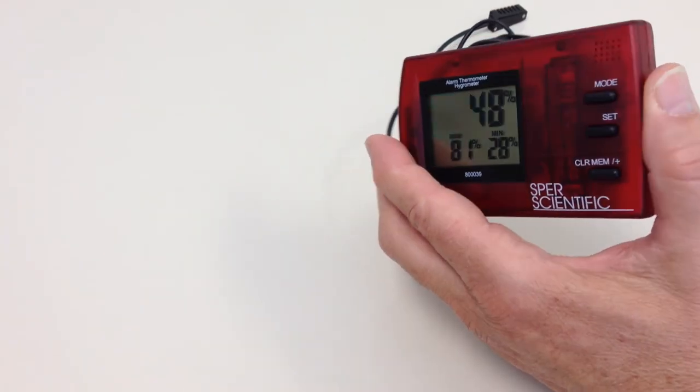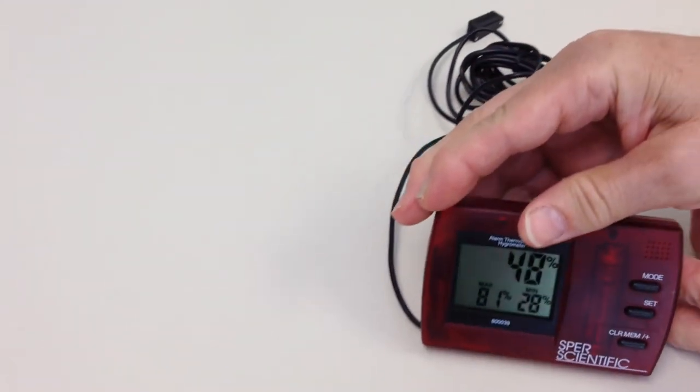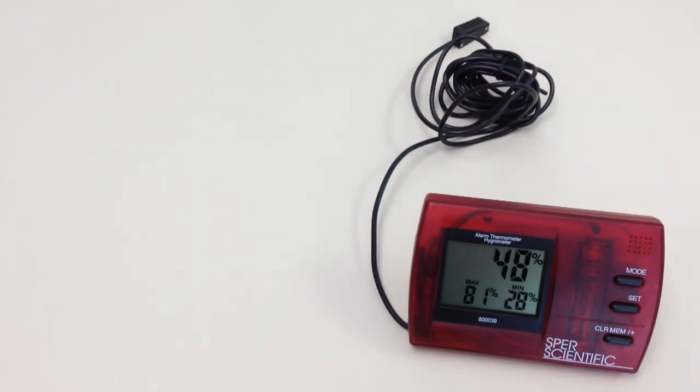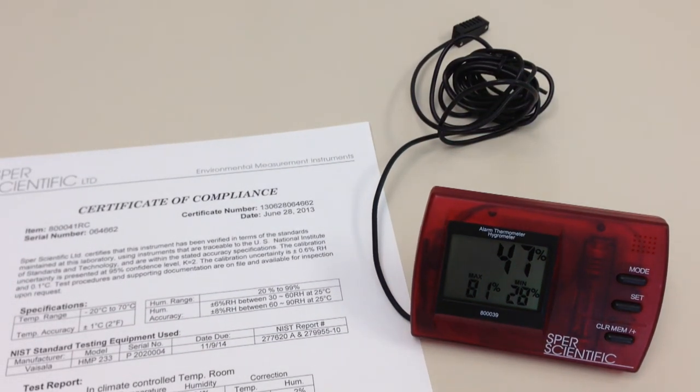You can select a centigrade or Fahrenheit display. The unit stands or wall mounts and comes with one AAA battery. An NIST traceable certificate of compliance is also available as an option.